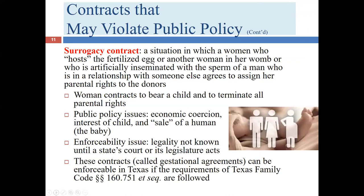In this case, the surrogate mother was married and already had biological children of her own. She agreed she would give up custody of the child once born. As the pregnancy continued, however, she decided that was not what she wanted to do and sought to keep the child or at least have some custodial relationship with it.